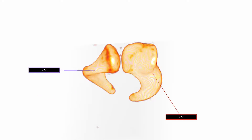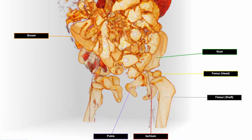I'm going to release the clipping planes now to reveal the rest of the volume. As we can see, these two bones are the pubis and ischium, or two of the three bones that form the pelvis in a two-year-old male patient.